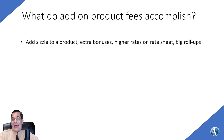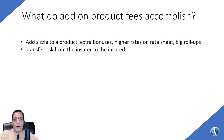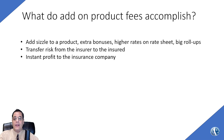What do add-on product fees accomplish? Well, they add sizzle to the product — you can say it has a 6.10% cap instead of a 4.10% cap. I've seen them offer extra big upfront bonuses, higher rates on the rate sheet, and big rollup rates for income. It also transfers risk from the insurer to the insured. If you're paying a fee for income you might use in 10 years and you decide you don't use it, you just paid 10 years of fees — at 1% or more on a million bucks, that can be $100,000 — and then you don't use it. So the insurance company wins either way. Use it or not use it, they don't care — they already made their fees. It's an instant profit for the insurance company.